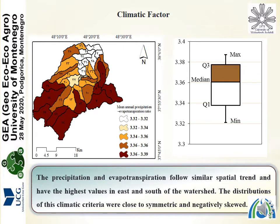The results show that precipitation and evapotranspiration follow similar spatial trends and have the highest values in the east and south of the watershed. The distribution of these climatic criteria were close to symmetric and negatively skewed, as shown on the left side of this slide, which also shows the spatial pattern of the climatic factors. The north of the watershed is in an unhealthy condition for this factor. The right side of the slide shows the whisker box plots of the reduced climatic factor.